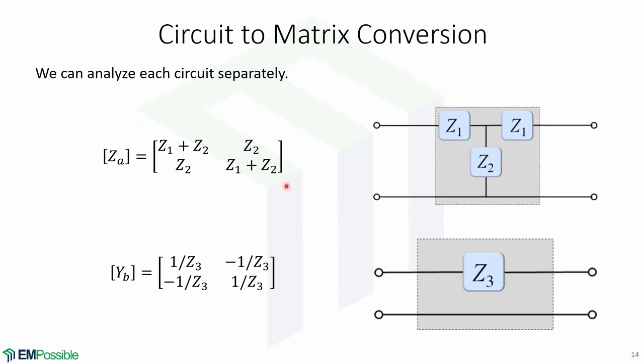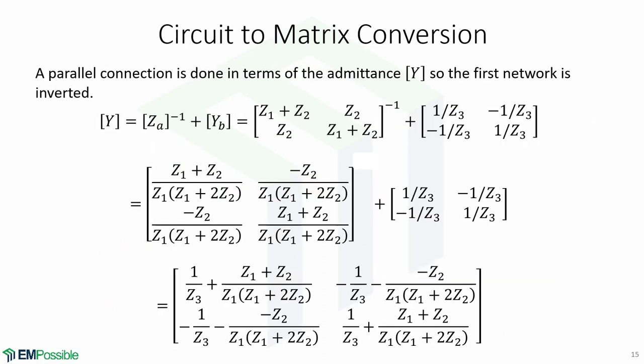Now we can find the impedance matrix of the T network and the admittance matrix of the Y network. Now as you recall previously, a parallel connection is done in terms of admittance Y, so the first network needs to be inverted. So we're going to invert the impedance matrix and then we're going to add it to the admittance matrix. After some algebra, we arrive to this expression. And this is how you do the circuit to matrix conversion.